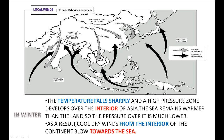In winter, the temperature falls sharply and a high pressure zone develops over the interior of Asia. The sea remains warmer than the land, so the pressure over it is much lower. As a result, cool, dry winds from the interior of the continent blow towards the sea.